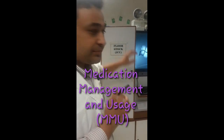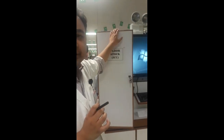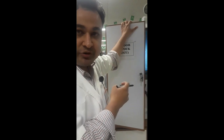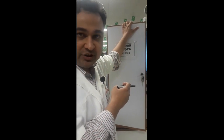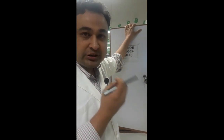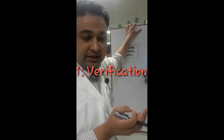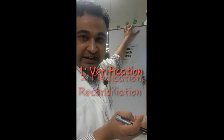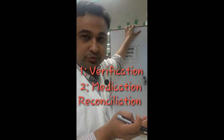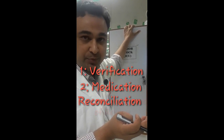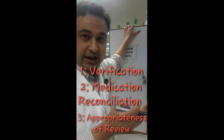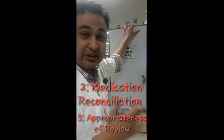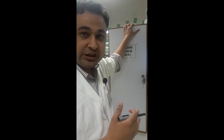When a doctor orders a medication, you have to go through three processes. One is verification, one is reconciliation, and three is appropriateness review. Today we will explain these three things.